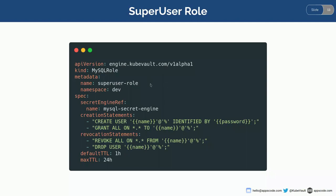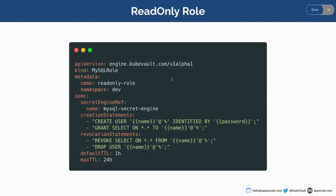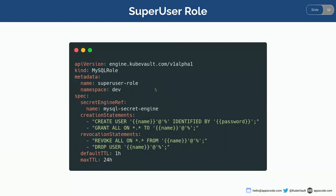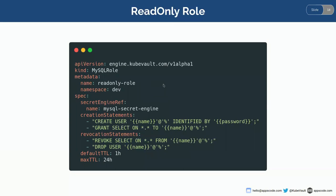In the super user role, I'm providing the secret engine reference where I want to create this role. In the creation statement and revocation statement, I've provided some MySQL statements — the creation statement is used to create a role in the DB and the revocation statement is used to revoke the DB. I've also set the default TTL and the max TTL. Similarly, for the read-only role, the only difference in the creation statement is I'm giving SELECT-only permission instead of ALL permissions. So let's go ahead and create those roles.